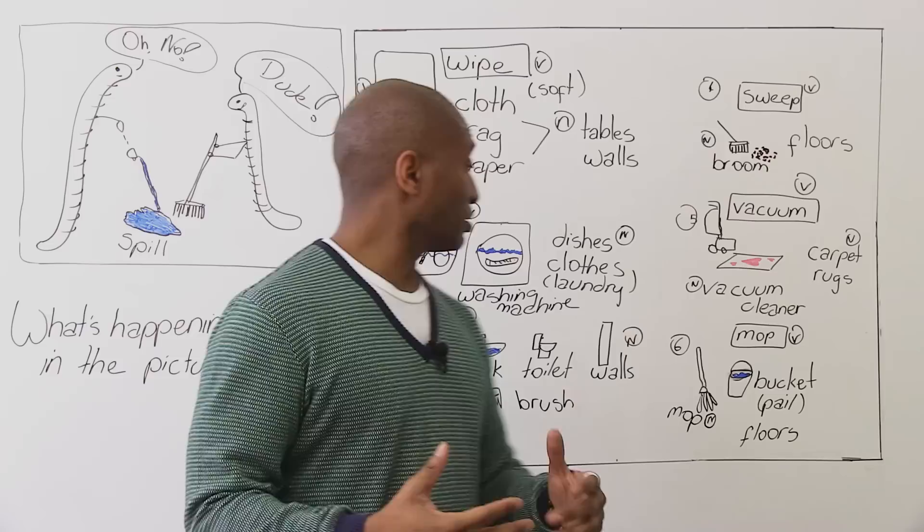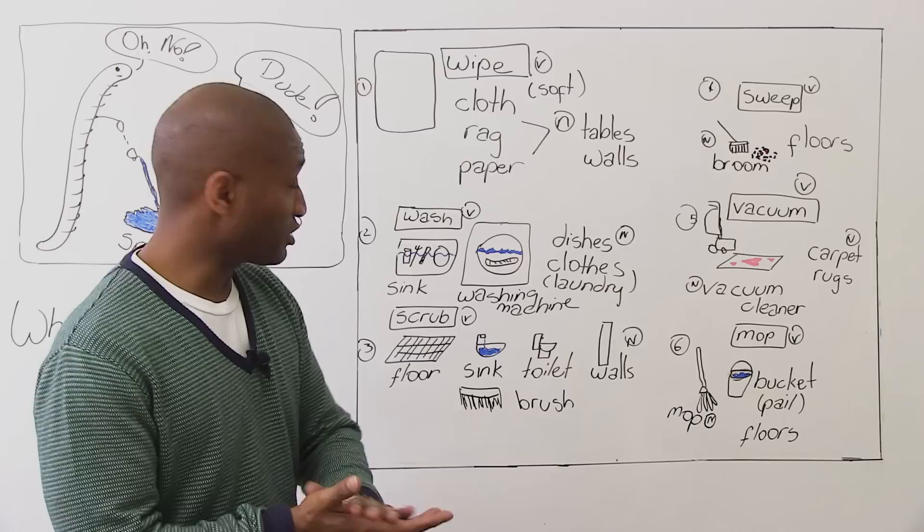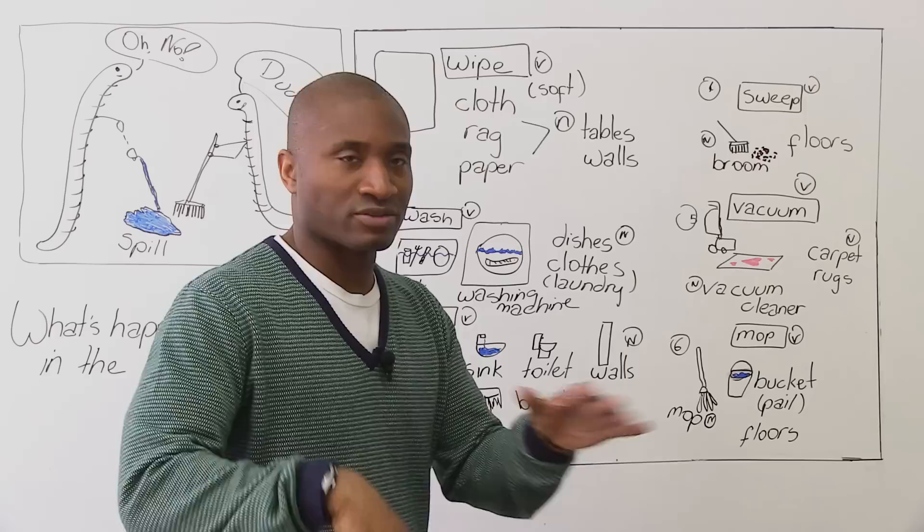Mopping is for wet things, for liquids. Vacuum is for carpets and rugs. Brooms are for floors, normal floors. You brush or you scrub hard surfaces, things that are really, really dirty. You use a brush. You wash in the sink your dishes and your clothes in a washing machine. And you wipe most things many times. In the day, you'll wipe things all the time just to clean it a little bit. You like that? Cool.